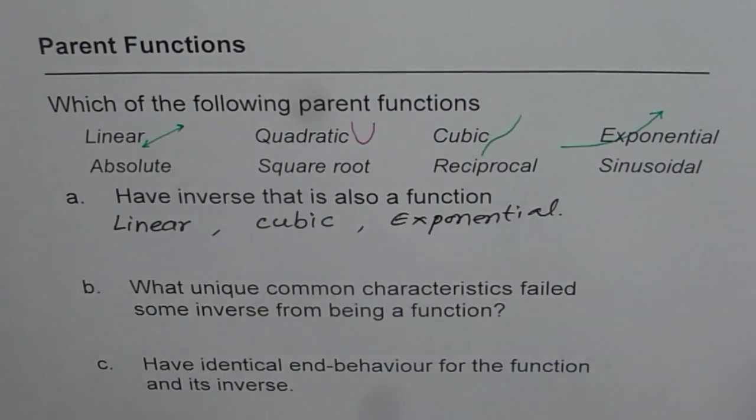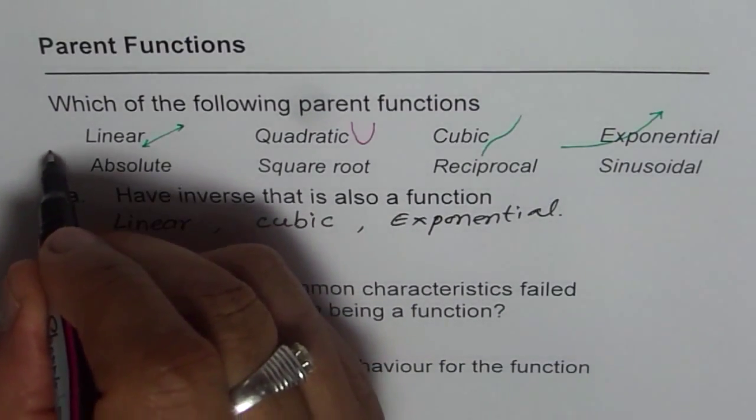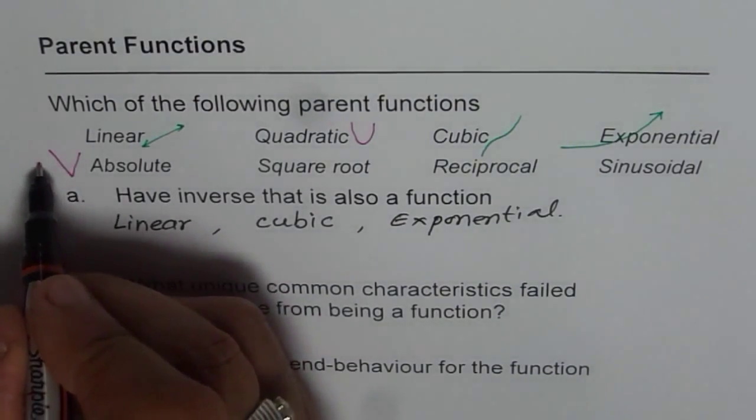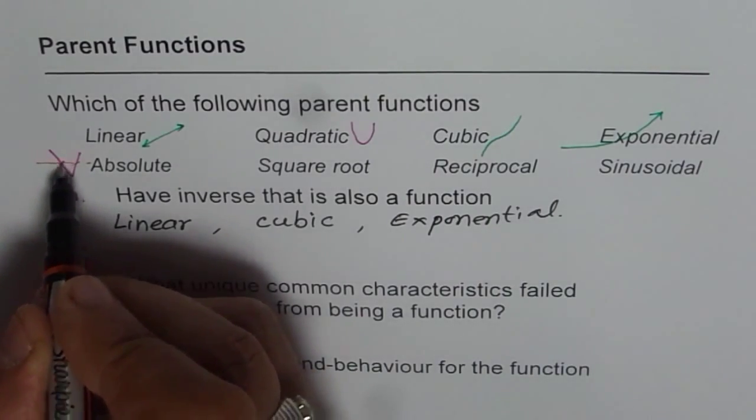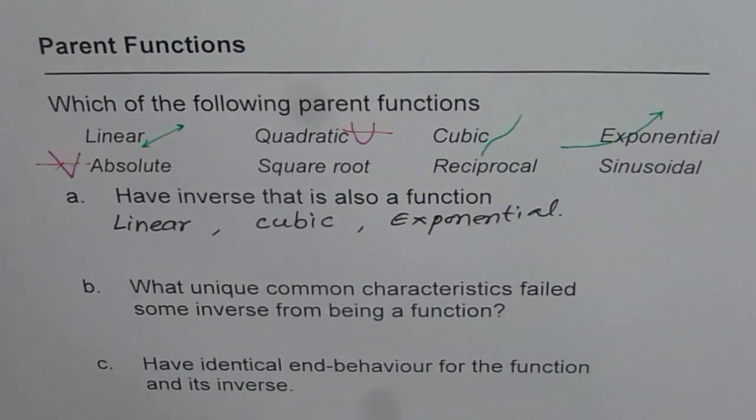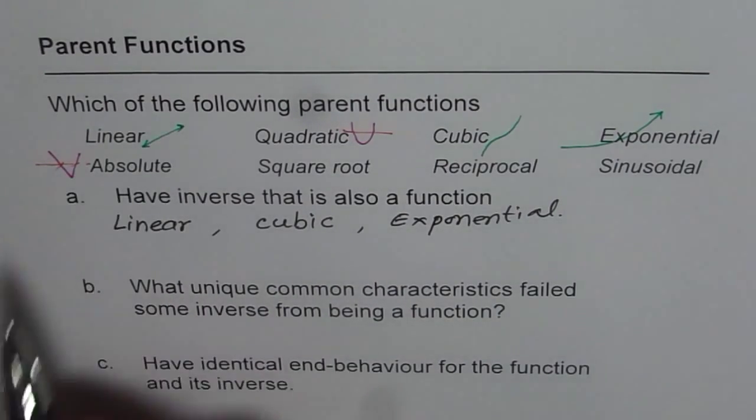Absolute function. Now absolute function is something like this. It fails the horizontal line test. When I say horizontal line test, what I'm trying to say is if I draw a horizontal line, it cuts at two points, just as it cuts here for a quadratic function. Therefore, their inverse is not a function. The inverse of absolute function is not a function.